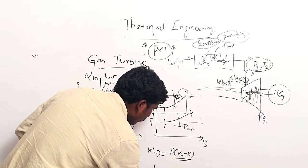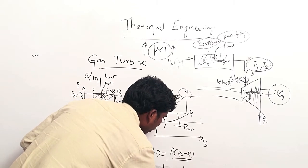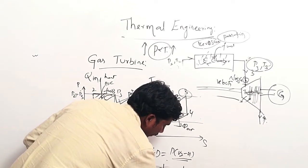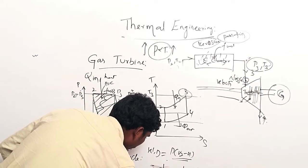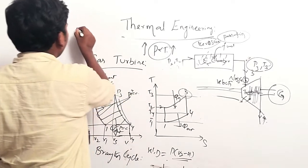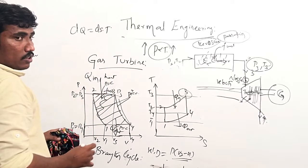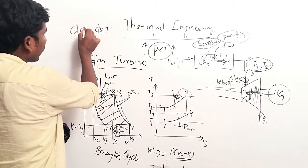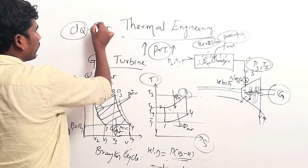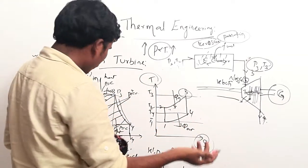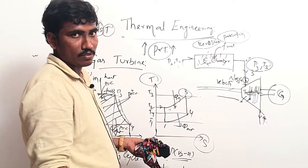The reason area under the TS diagram gives heat transfer is the formula: change in entropy DS equals DQ divided by T, so DQ equals T times DS. Area under the PV diagram gives work done, and area under the TS diagram gives heat transfer.